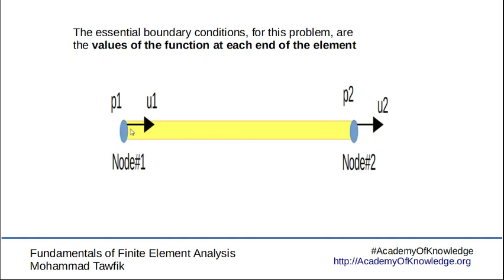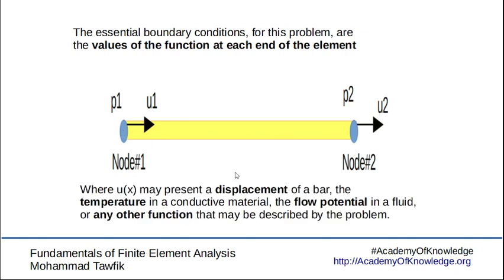So the end values, these values, are going to be our essential boundary conditions. These can represent maybe the displacement in a bar or the temperature in a conductive material, the flow potential, or any other function that may be described by our problem.